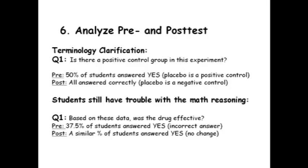So when we analyze the pre-post test questions, for question one — remember that's the one about Alzheimer's drugs — we asked: is there a positive control in this experiment? In the pre-test, about 50% of students answered yes. So that really showed us students have a terminology confusion: they think that a placebo is a positive control. A placebo will not generate any expected result — it's a negative control. So in the post-test, all the students answered placebo as a negative control.